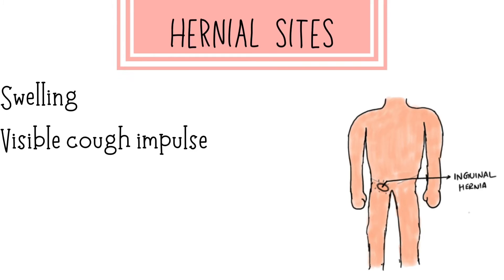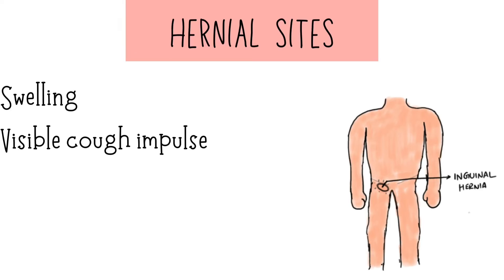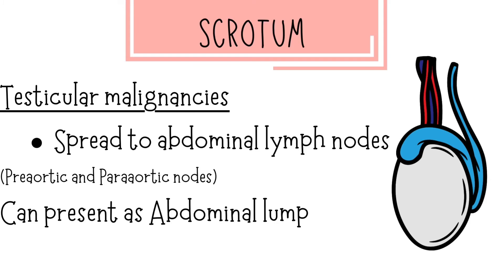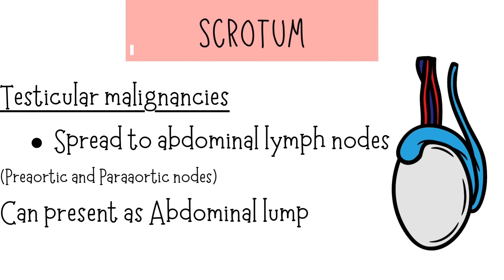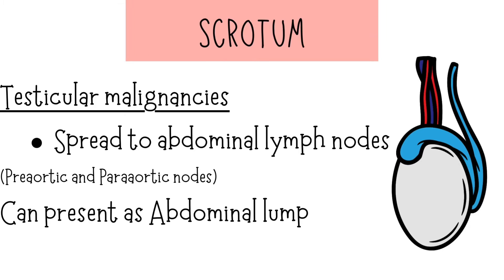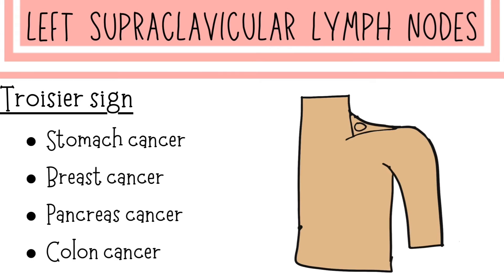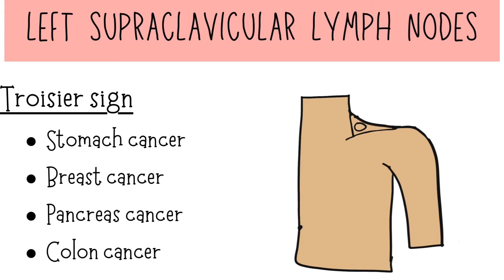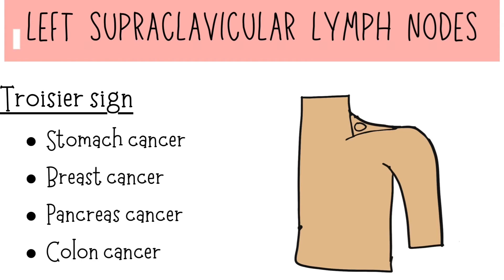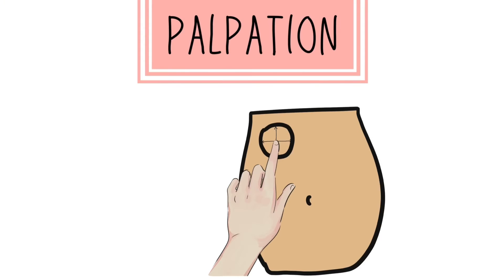We have to examine the hernia sites for any visible swelling or visible cough impulse. We also have to inspect the scrotum, because testicular malignancies can spread to abdominal lymph nodes such as pre-aortic and para-aortic lymph nodes, presenting as an abdominal lump even before testicular symptoms manifest. We also have to examine the left supraclavicular fossa for enlarged left supraclavicular lymph nodes, known as Troisier's sign, seen in cancers like stomach, breast, pancreas, and colon cancer.